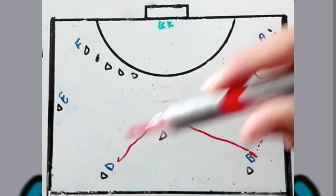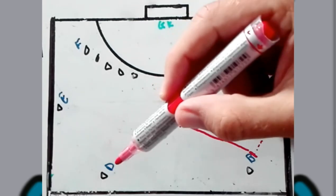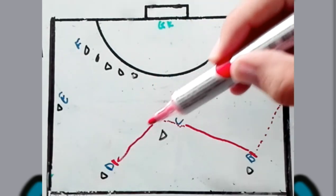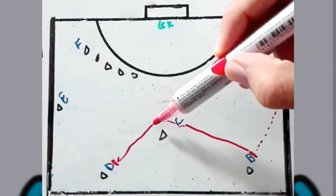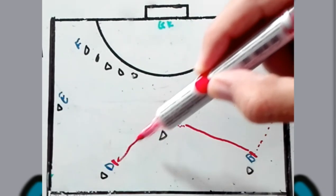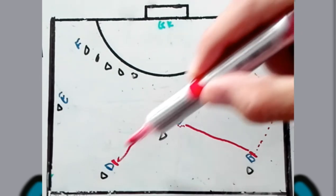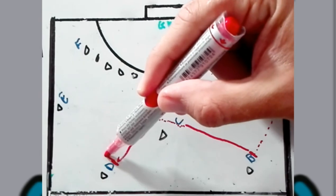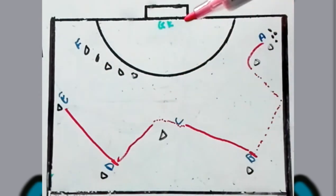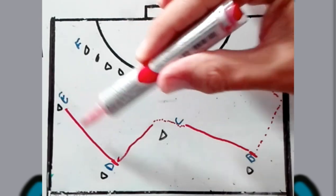Player D will receive it facing already in that direction where it's going to go to, so his body position will be facing there so he can just stop it and pass without having too many touches. So he will stop and then pass it to player E.